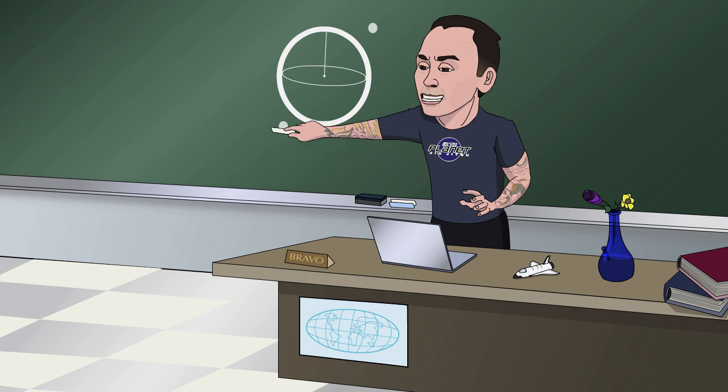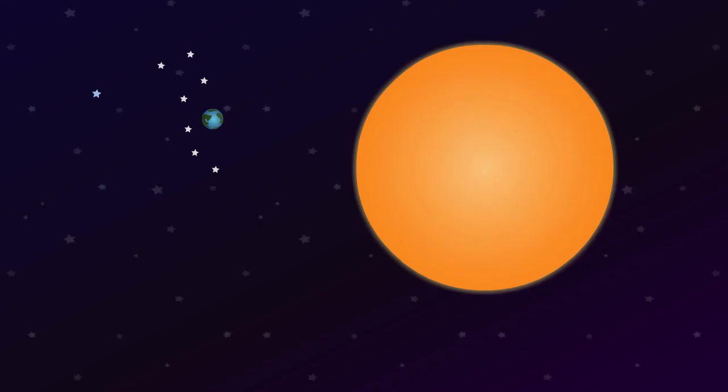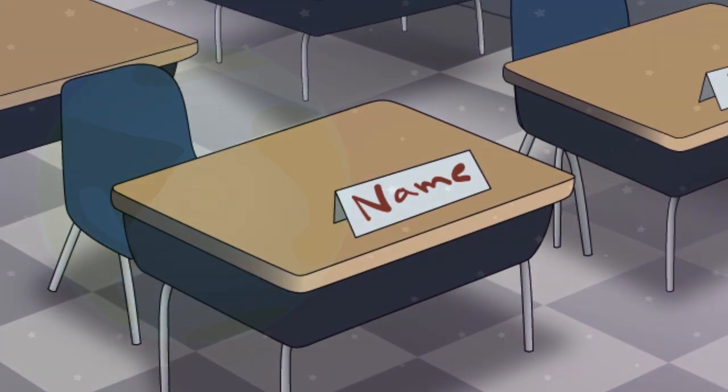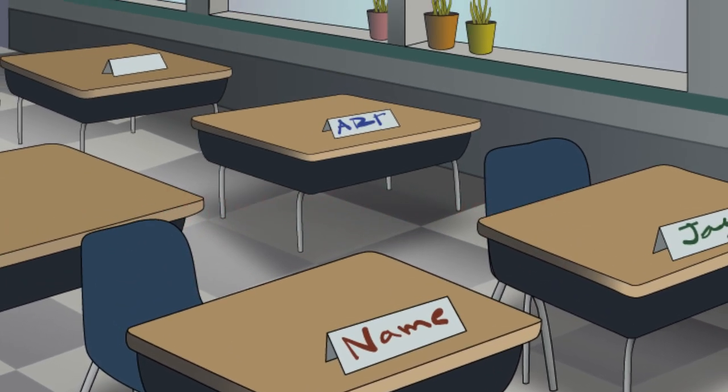You could only see the side of the universe. Six months later we're seeing all those stars, right? Six months later back, we're seeing all those stars. So there should be a bunch of other stars, so what should we see?